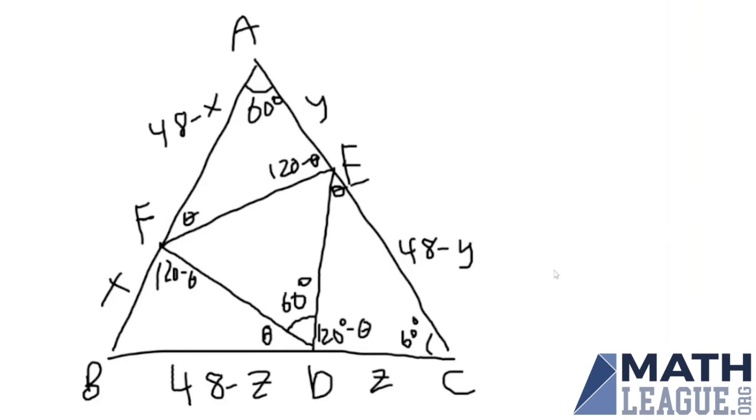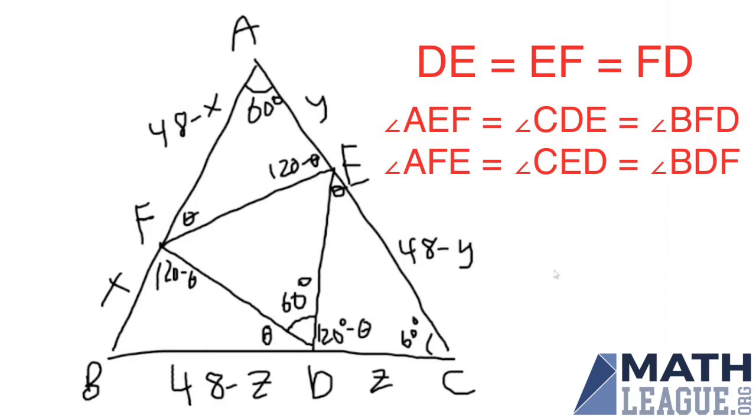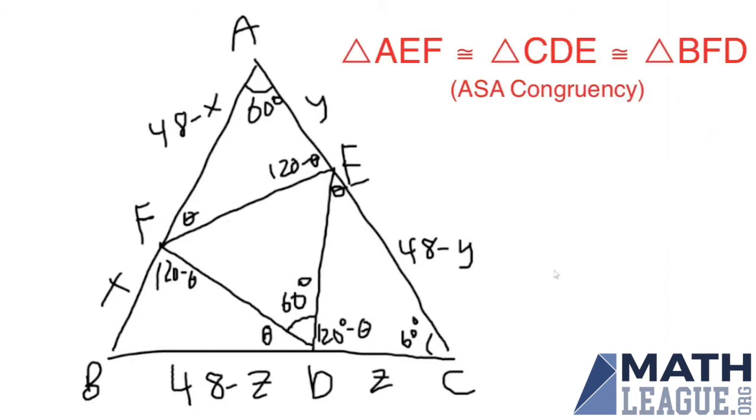Note that because DEF is an equilateral triangle, all of these side lengths D, E, E, F, F, D are equal to 39. And since these angles are all the same within triangles AEF, BFD, and CDE, this means that all three of these triangles are congruent. This means that X equals Y equals Z. So we can label all of these X.